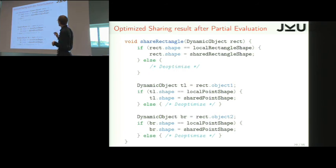And the machine code generated looks like this. Of course, here we use Java, so it's a bit more readable. But essentially, it says like, if the top object is a local rectangle, so if it's just a rectangle that's not been shared, then we just update the shape to be the shared rectangle shape.